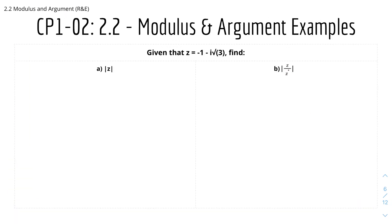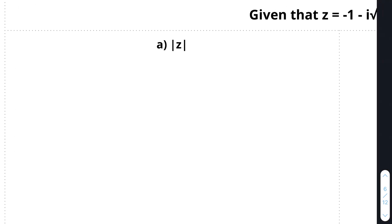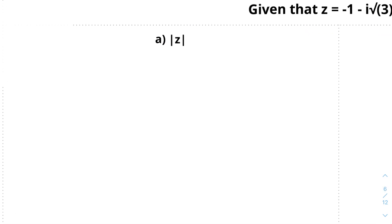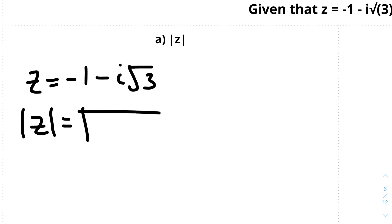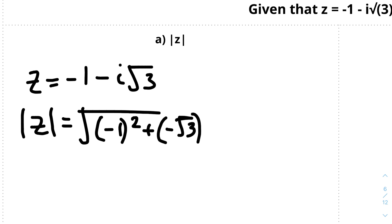For another example, given that z equals minus 1 minus i root 3, find the modulus of z. We know z equals minus 1 minus i root 3, so the modulus of z equals the square root of minus 1 squared plus minus root 3 squared. It doesn't matter about the signs because squaring removes them. So it will be root of 1 plus 3, which equals 2. So the modulus of z is 2.